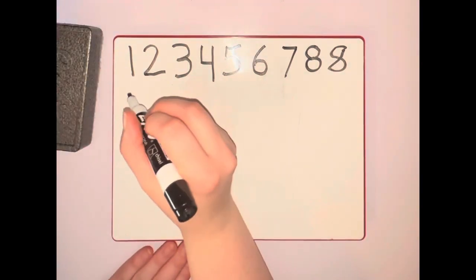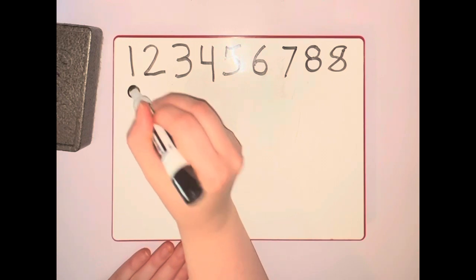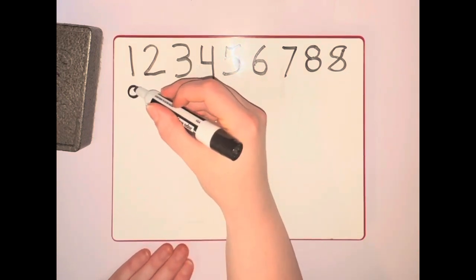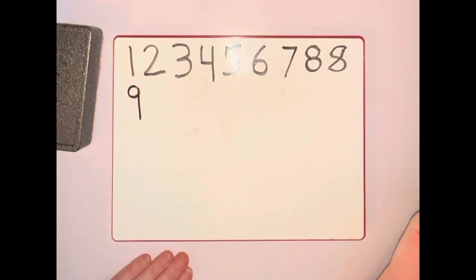Next we have a nine. It's a circle from top to middle, and then on the right side, a line down to the bottom.